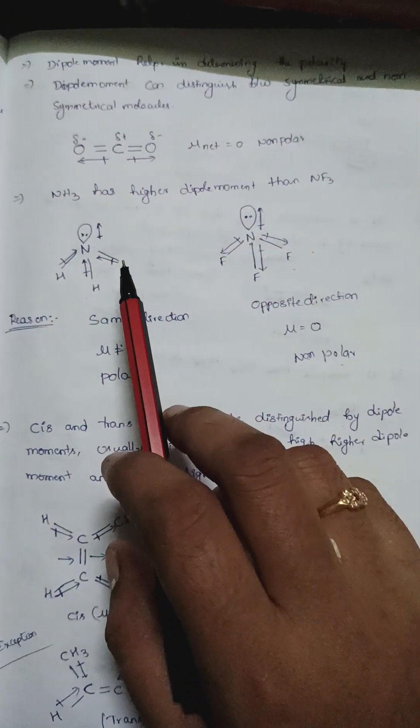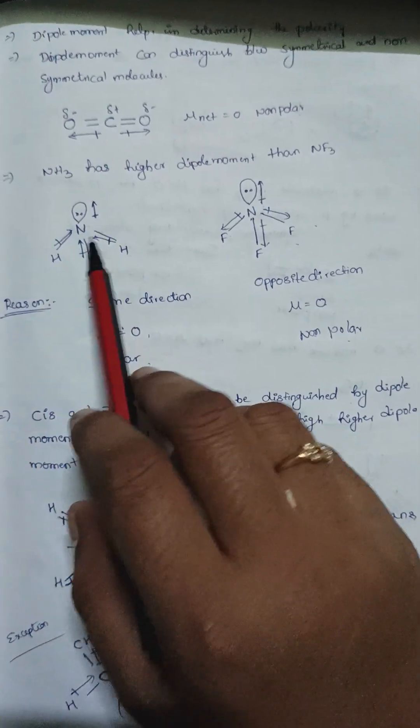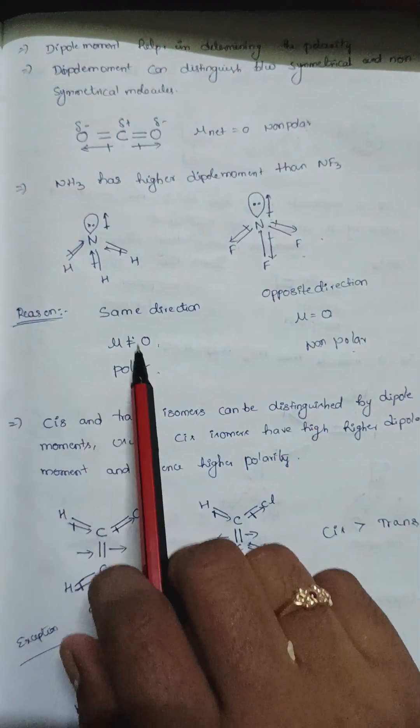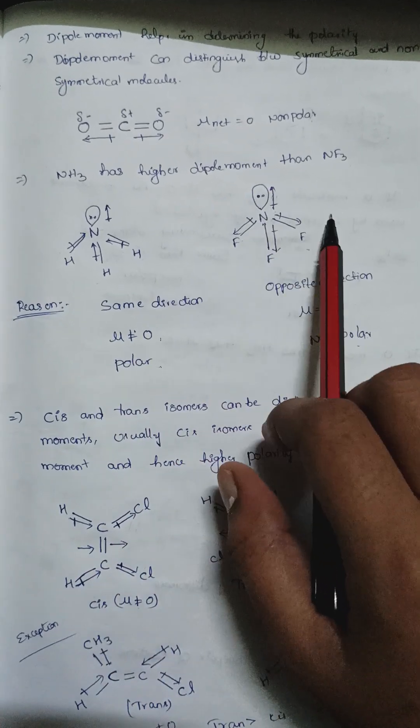If we take one example, NH3 has a higher dipole moment than NF3. In NH3, all vectors are in the same direction, so the net dipole moment is not equal to zero, making it a polar molecule.